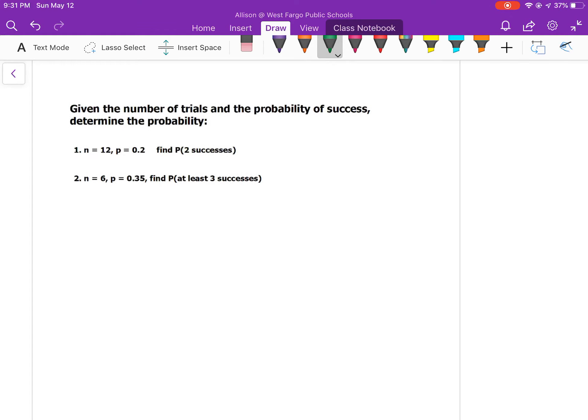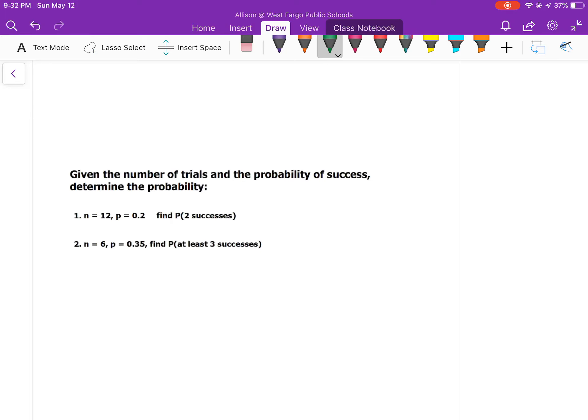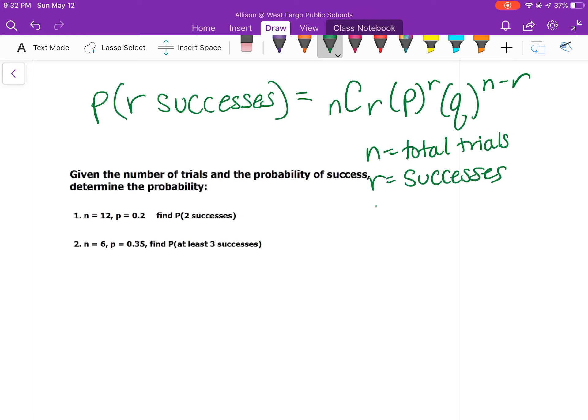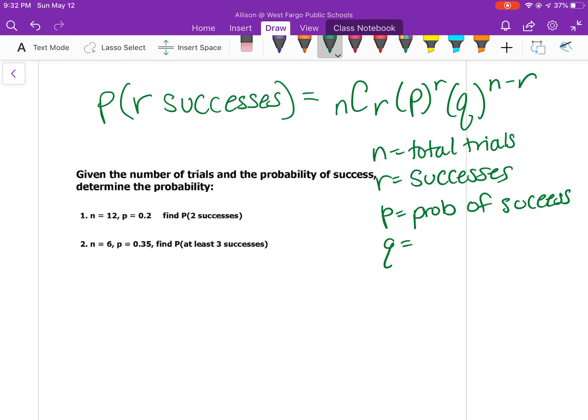The binomial probability formula is P, probability of having R successes. We use combinations, so you do N combinations of R, and then P to the R, and then times Q to the N minus R, where N is your total number of trials, R is your successes, P is the probability of success, and Q is probability of failure.